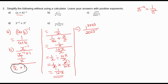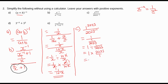For part c, we have 1 over 2023 to the power negative 1. 1 to the power of any positive exponent gives 1, so this becomes 1 divided by 1 over 2023, which is the same as 1 times 2023 over 1. The answer is 2023.